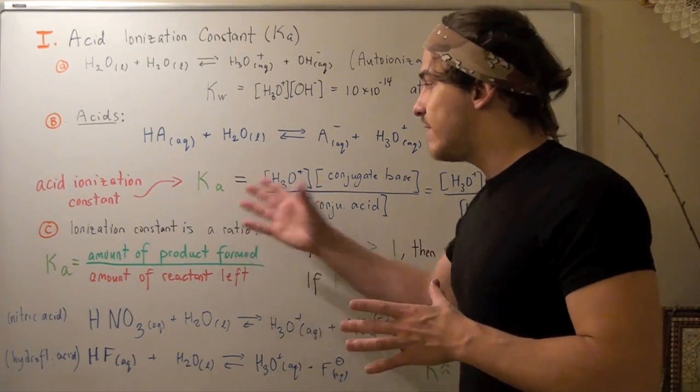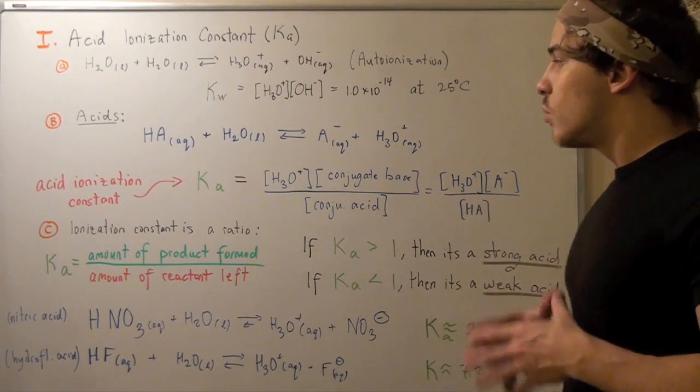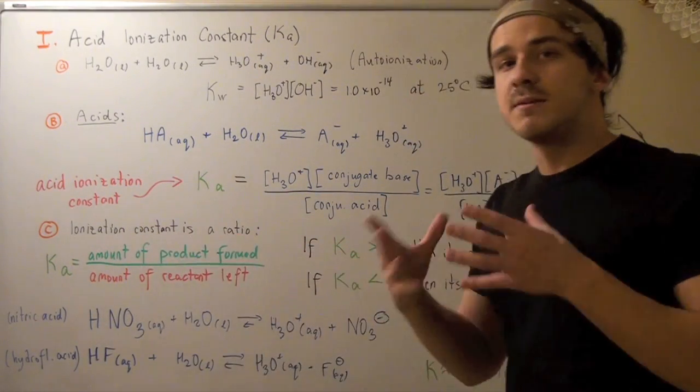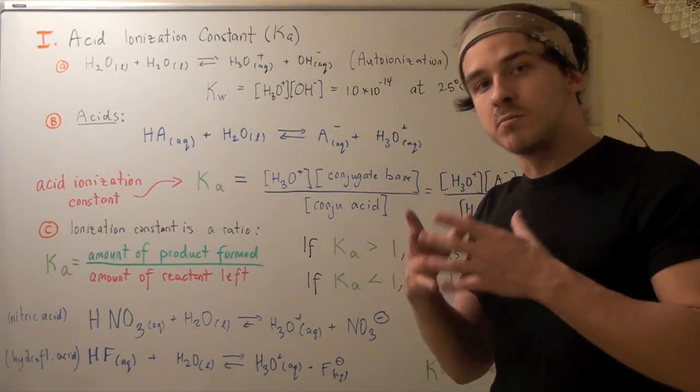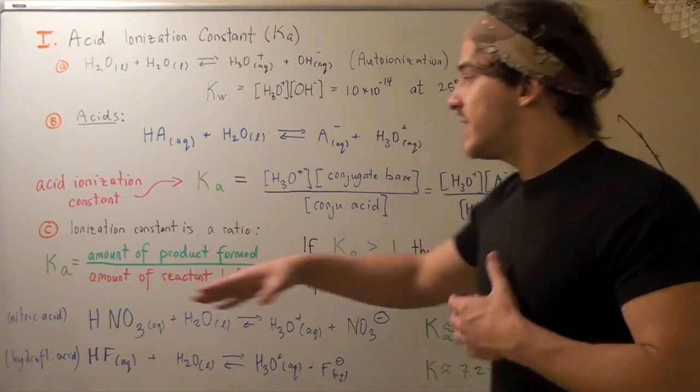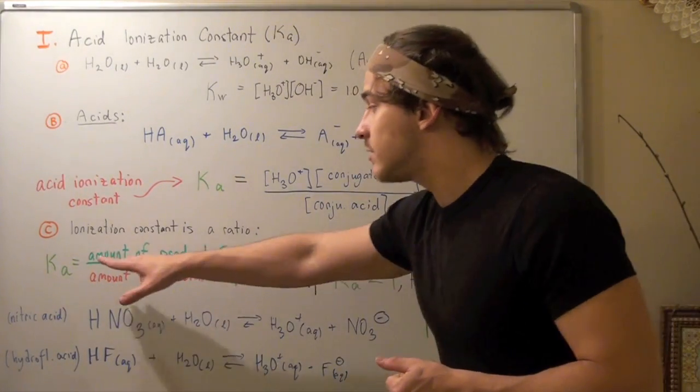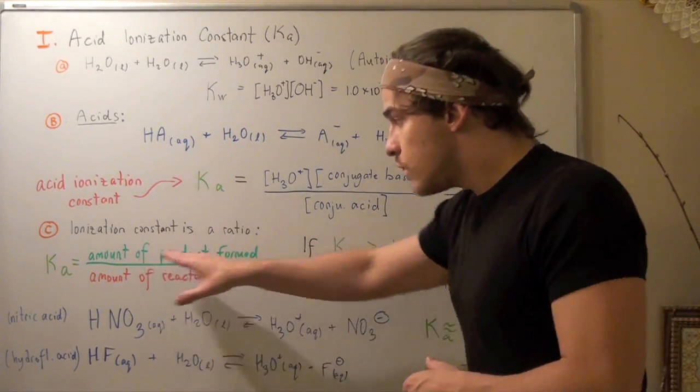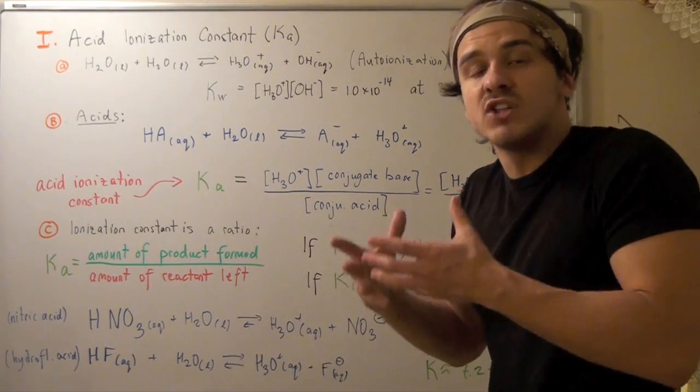What is a Ka value? The ionization constant is simply a ratio from a mathematical perspective. Ka is the amount of product formed over the amount of reactant left over.